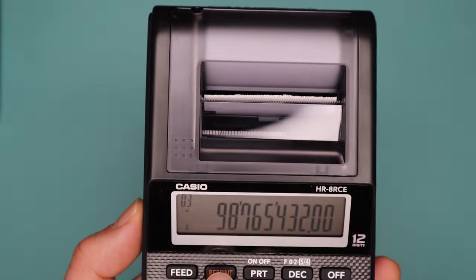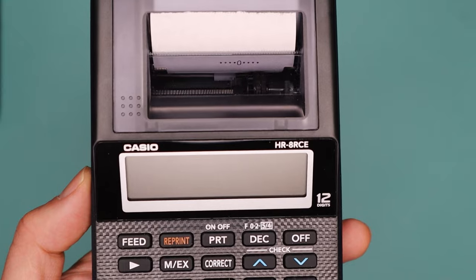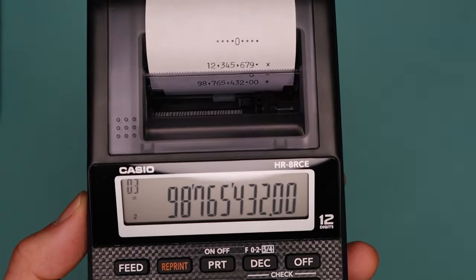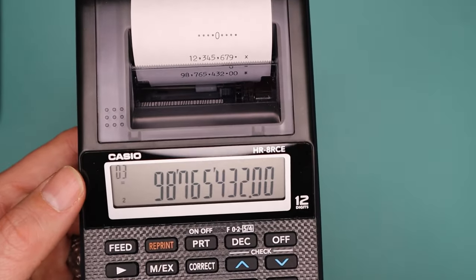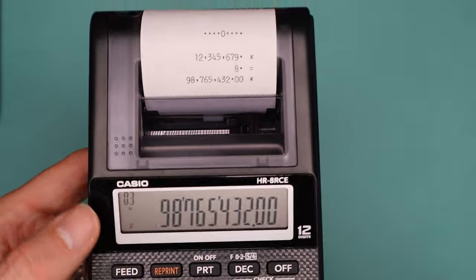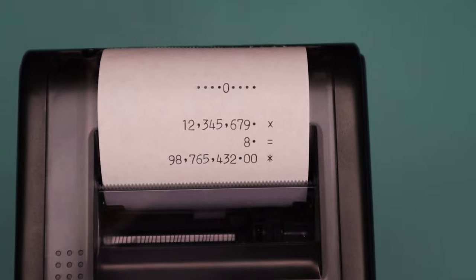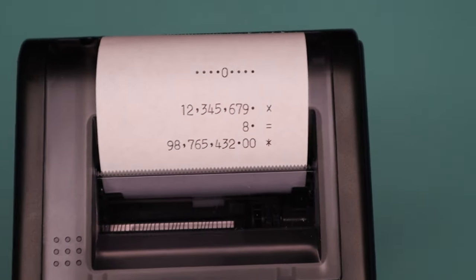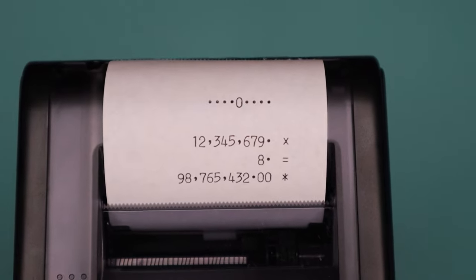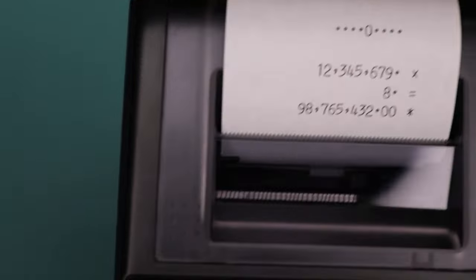And now if you want to print the results, there's the reprint button there. And then to advance the roll, I'm just going to press feed a couple of times. And then if I just zoom in, see there, it's quite clear, quite decent quality printer. It's a little bit noisy. I'm not sure if the camera picked it up.